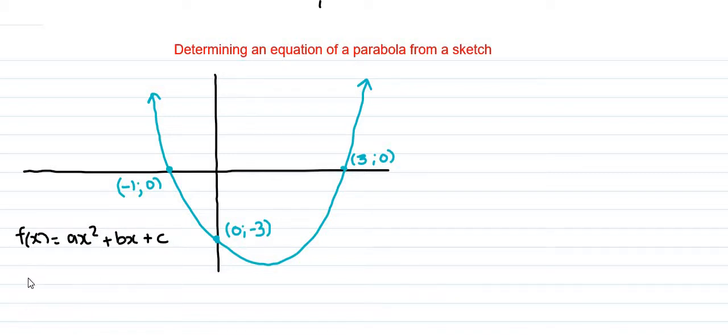The first way is this one: y equals a into (x minus x₁)(x minus x₂). And then the turning point layer, y equals a into (x plus p) all squared plus q.